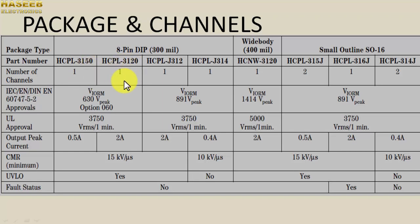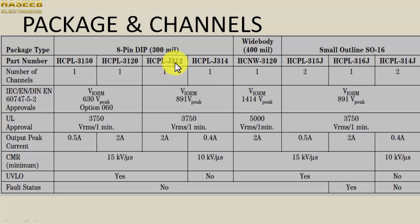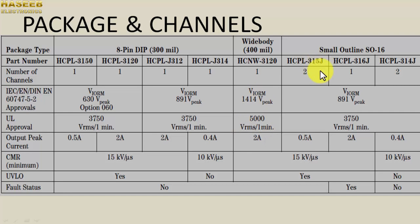HCPL-3150 has a single channel output and HCPL-3120 has a single channel output — both are 8-pin DIP configurations. HCPL-3150 has 0.5 ampere output and HCPL-3120 has 2 ampere output. HCPL-J312 is a single channel 2 ampere device, HCPL-314 is 0.4 ampere, and HCNW-3120 has 2 ampere single channel. HCPL-315J has two channels at 0.5 ampere, and HCPL-314J has 0.4 ampere.